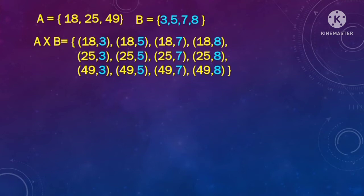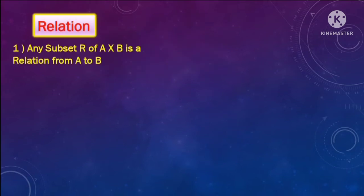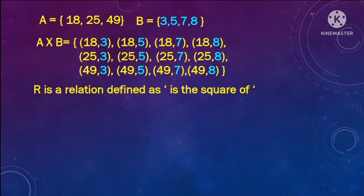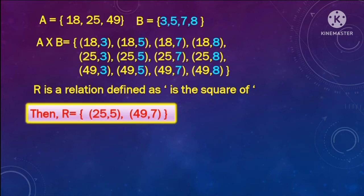The very first difference is the definition itself. A relation is nothing but any subset of the Cartesian product A cross B. So for this example, let's define a subset R which is 'the square of.' 25 is a square of 5, so that ordered pair will be here. Also 49 is a square of 7, so that ordered pair will also come in set R. This set R is nothing but a subset of the Cartesian product A cross B, and that's why it's called a relation.